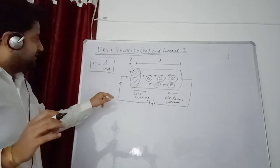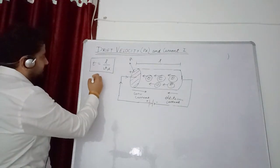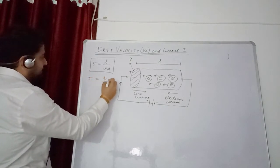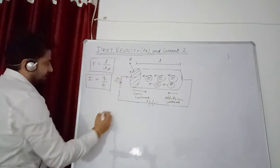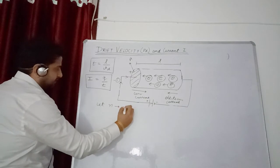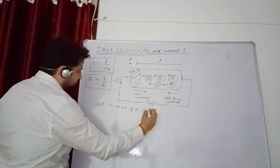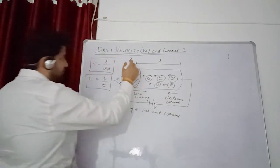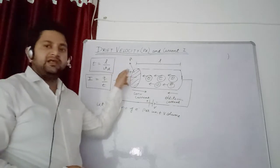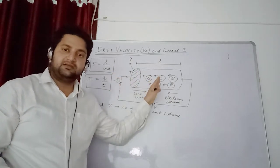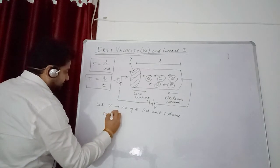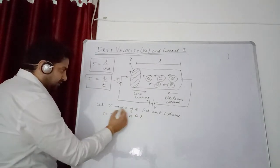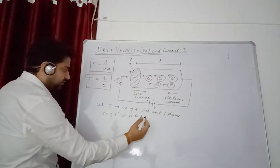Time period is L upon vd. Secondly, we know that I equals Q upon T. Now let us suppose that N is number of electrons per unit volume. And this is the conductor. If this is area A and length L, then volume is area into length. So here is number of electrons.